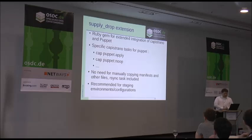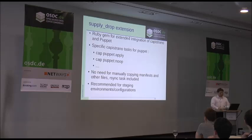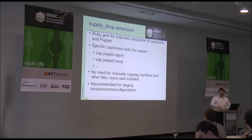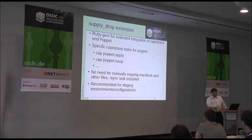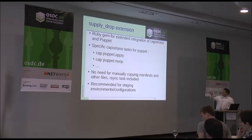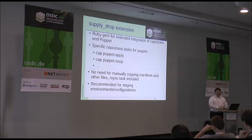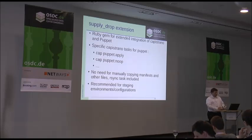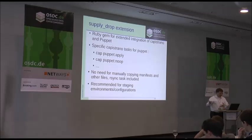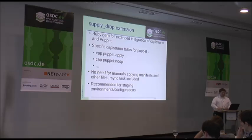SupplyTrop is something we now use more and more because it helps to simplify the process. SupplyTrop has several tasks integrated in Ruby libraries. For example, the Puppet apply can be run directly — you don't have to write it separately in your Cap file; it's laid down in the SupplyTrop library. So you execute 'cap puppet:apply' and this will automatically connect via SSH and run Puppet apply on the remote host. Same goes for Puppet no-op, delivered by the SupplyTrop gem.